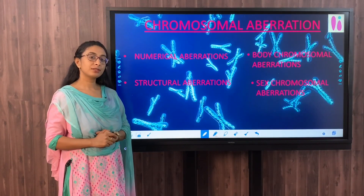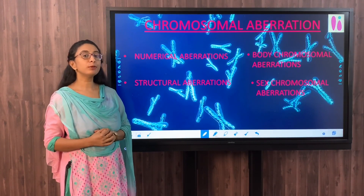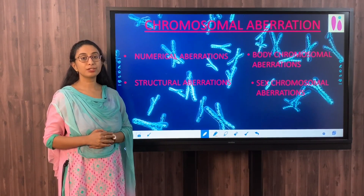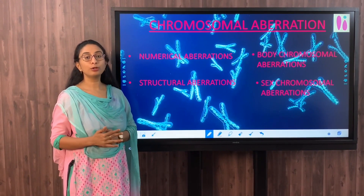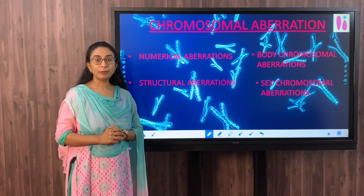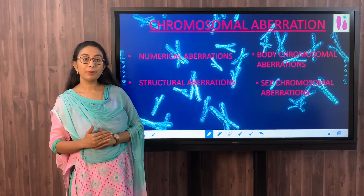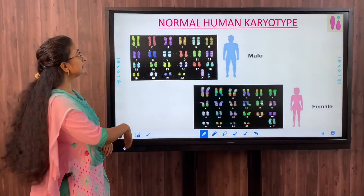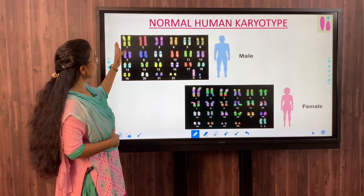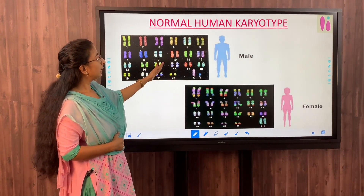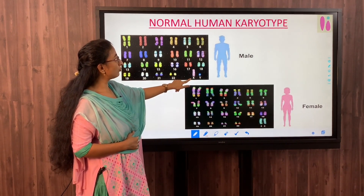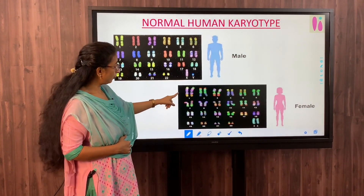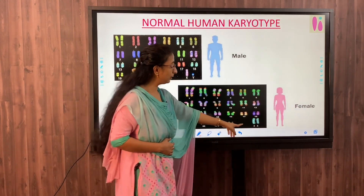To diagnose chromosomal aberrations, a preliminary medical examination may reveal symptoms. However, symptoms alone are not sufficient to confirm a particular aberration. Karyotyping tests need to be done to confirm. Karyotyping is a test to study the size, shape, structure, and number of chromosomes in a systematic manner. In a normal human karyotype, chromosomes are arranged from 1 to 22. A male karyotype shows one X and one Y chromosome, while a female karyotype shows 22 pairs of chromosomes along with 2 X chromosomes.